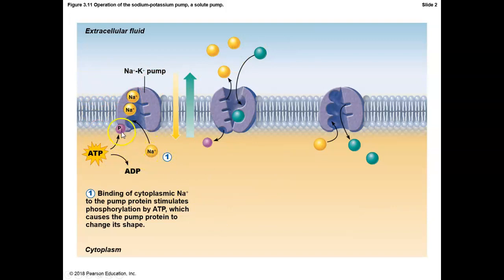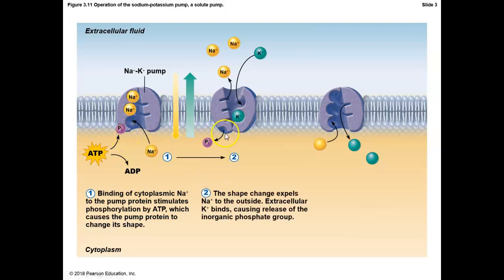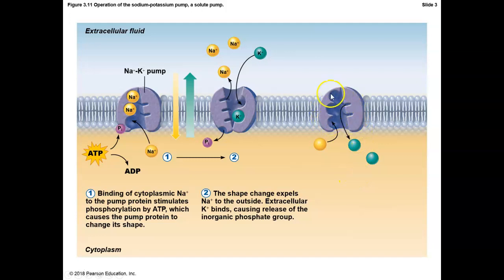The sodium-potassium pump works as follows: sodium binds to the inactive pump, which is at rest and open to the internal environment. Then ATP binds and gets activated; ATP is broken down to ADP plus phosphate. The activated pump opens to the extracellular environment, sodium is released outside, and those binding spots change configuration. Now it has an opening for potassium — potassium comes in and binds. When the phosphate moves away, the pump returns to its resting configuration open to the internal environment, potassium is released inside, and sodium can bind again to repeat the cycle.